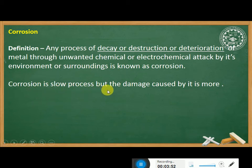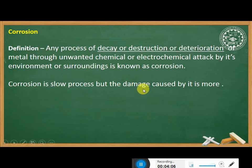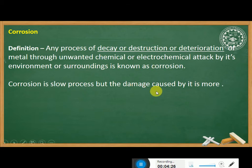Corrosion is a slow process, but the damage caused by it is more significant. Even though the corrosion process is slow, the damage it causes over time — for example, if one part of a machine is corroded — can be very serious.